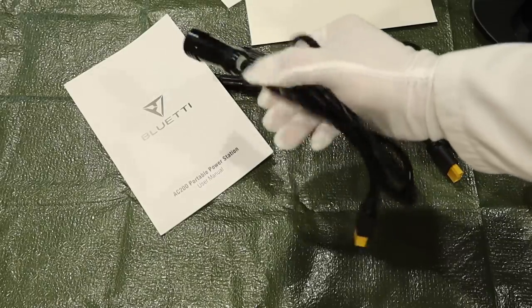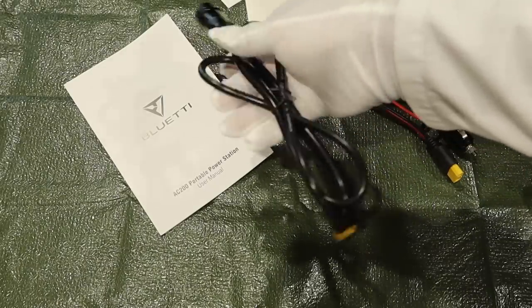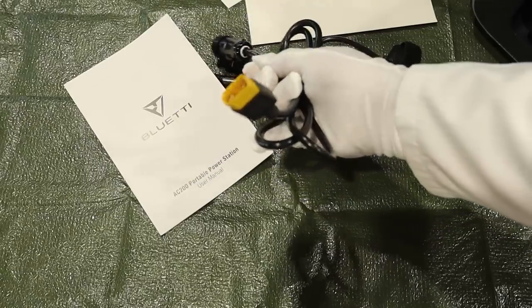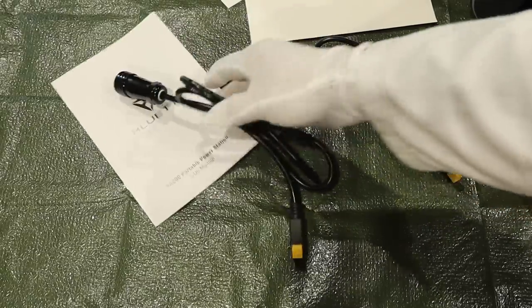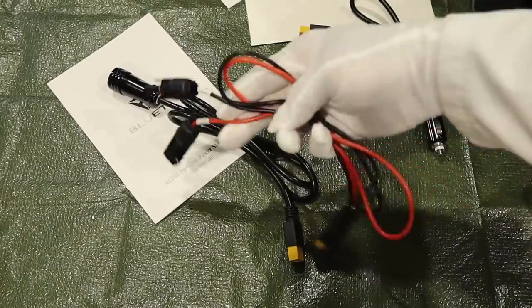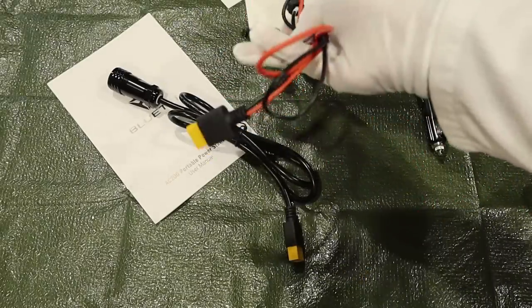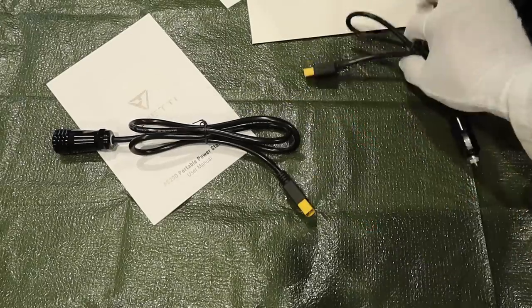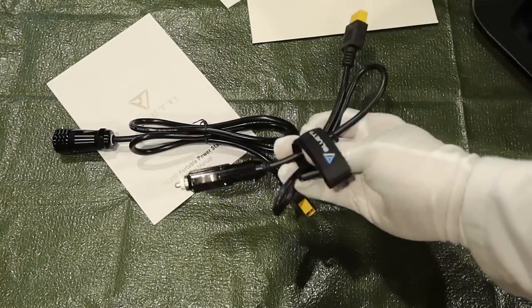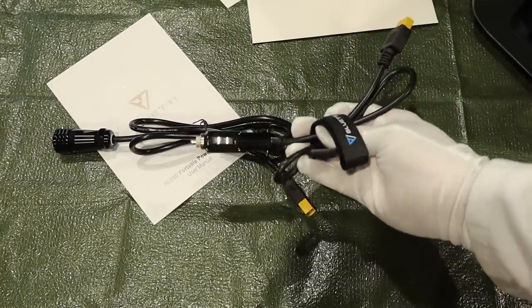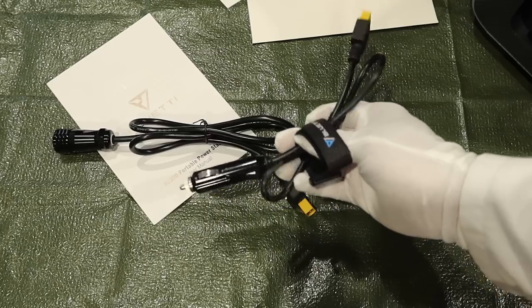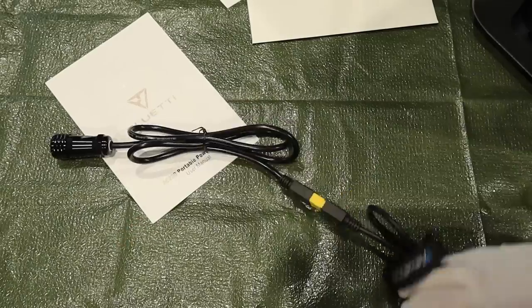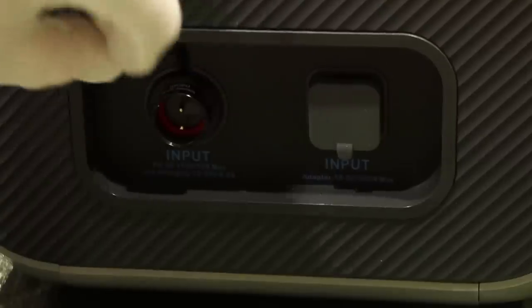Now, this is an aviation plug. That's what they call it. This is for the input of the Bluetti into the solar input, and it comes with an XT90 adapter, and that XT90 plugs into this MC4 to XT90. You can plug your solar panels into the Bluetti, and it comes with a cigarette lighter cord accessory cable for a vehicle, so you can charge it from 12 or 24 volts.